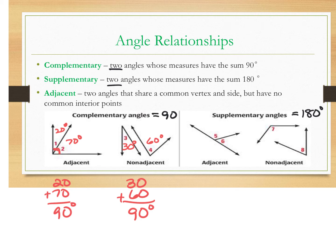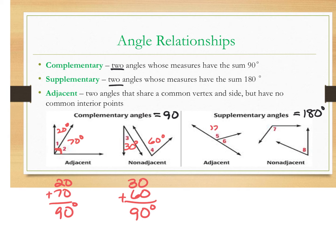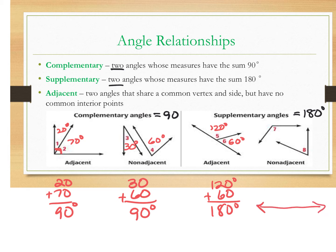For example, if angle five is 120 and angle six is 60, those two angle measures add to 180, which makes them a pair of supplementary angles. Generally, whenever you see a straight line — which is a straight angle — and it's divided into two angles, say one and two, these are always going to be supplements. We're also going to learn they're called a linear pair. If they add to 180, they're supplements; if they add to 90, they're complements. Let's say this one's 110 and this one's 70 — you can check that they would be supplements as well.